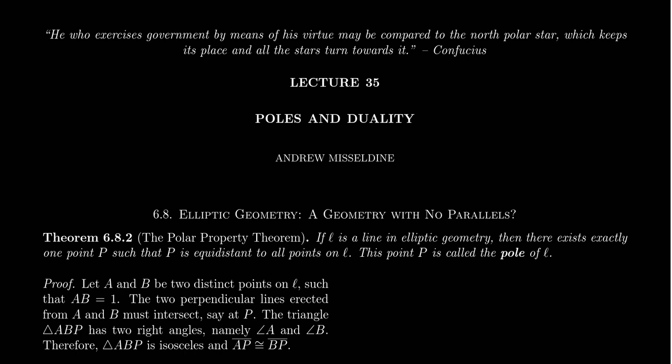This lecture is broken up into two major sections. The first part is loosely based on section 6.8 in Roads to Geometry by Wallace and West, about elliptic geometry. The next part of this lecture comes from section 7.3 about duality, which is a notion about projective geometry. As elliptic geometry is projective, we'll make the connection there.